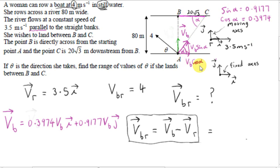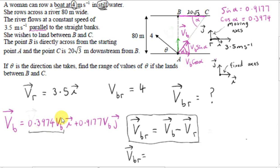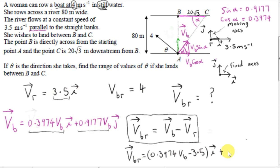Putting it all together: the I component of vector VB is VB cos alpha, which is 0.3974 VB, and the J component is positive 0.9177 VB. Now let's get vector VBR. Using the fact that the magnitude of vector VBR is 4, we take vector VB and subtract vector VR — taking the I component of VB and subtracting the I component of VR, and taking the J component of VB. The J component of VR is 0, so the J component of VBR is simply 0.9177 VB.